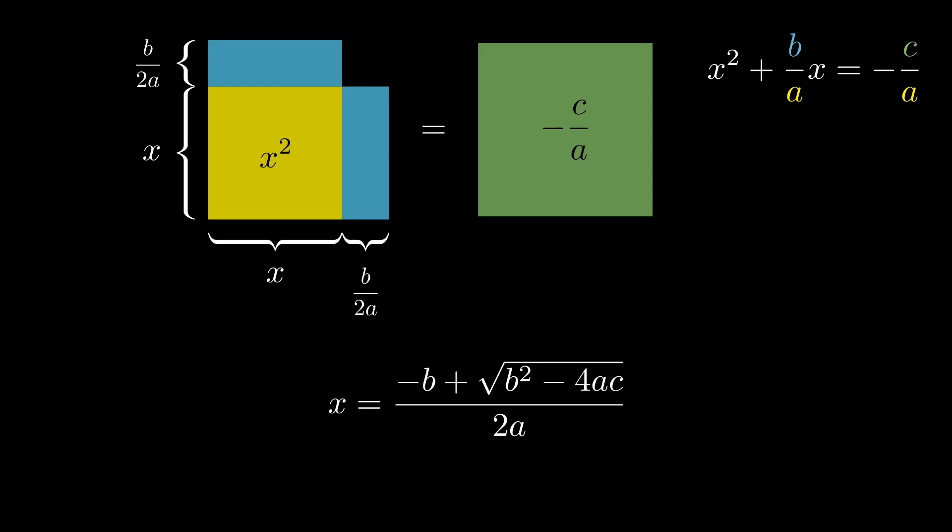Now, when we take the root of a number, it will give us a positive and a negative number. That's why you see a plus minus in front of the square root sign and not only the plus.